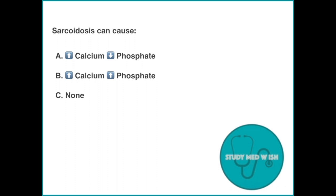Question 4. Sarcoidosis can cause: Option A, high calcium, low phosphate. Option B, high calcium, high phosphate. Option C, none of the above. The answer to this question is high calcium and high phosphate.